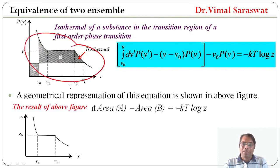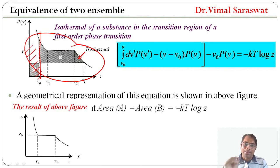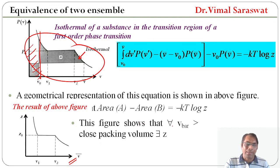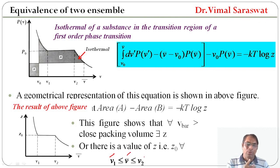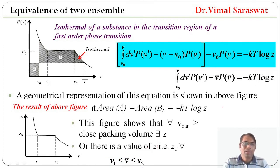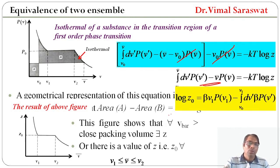The result of this figure shows that for all v̄ greater than the close-packing volume, there exists a value of z, namely z₀, for all v̄ between v₁ and v₂. This means there is a value z₀ such that v̄ lies in the range v₁ to v₂. Removing the intermediate terms, the actual result is: log z₀ equals beta times v₁ p(v₁) minus the integral from v₀ to v₁ of dv' beta p(v').